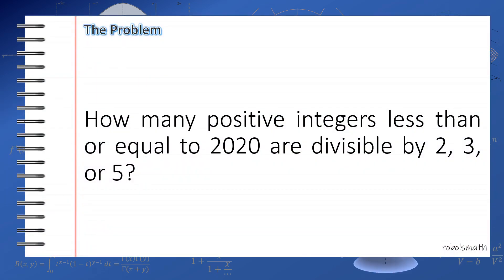The goal of this discussion is for us to be able to solve this problem, which is quite common in math competitions, either locally or internationally, even online. The problem is: how many positive integers less than or equal to 2020 are there that are divisible by 2, 3, or 5?